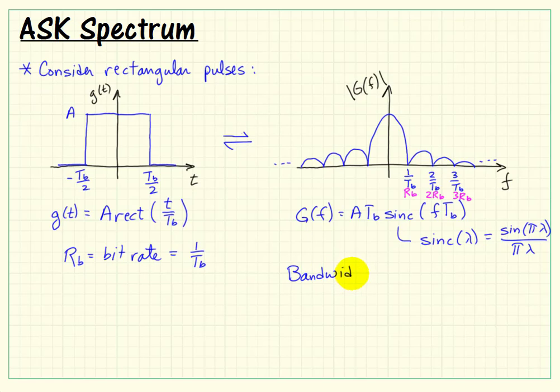Now we see that the sinc function extends pretty far on both sides. A standard way of defining the bandwidth would be starting from DC and going out to the first null. Call that the first null bandwidth. That has a value of your bit rate, which is equivalent to the reciprocal of your bit interval.